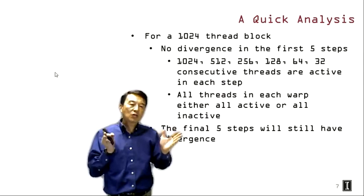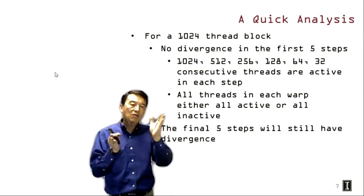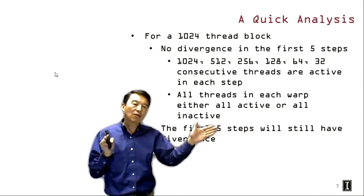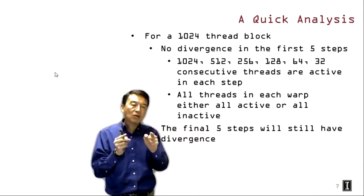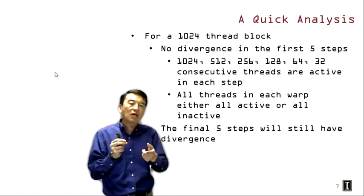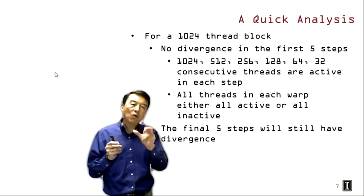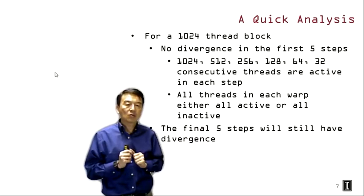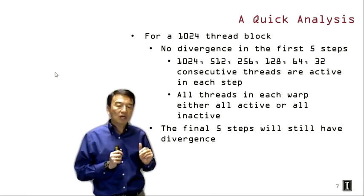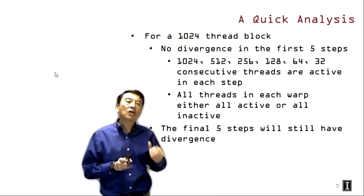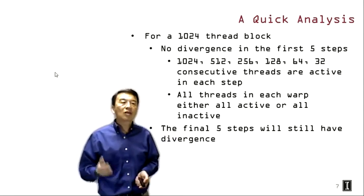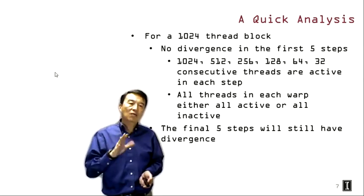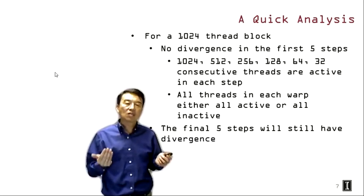Once we get down to 32 threads, control divergence begins. When we reach 16 active threads, only one warp in the entire thread block is active, and that single warp has progressively fewer active threads in the next steps. However, only that one warp consumes execution resources — all other warps are completely inactive. The final five steps still have control divergence, but we still have better resource utilization compared to the previous kernel. The difference in code is very small — most people wouldn't notice it at first glance.